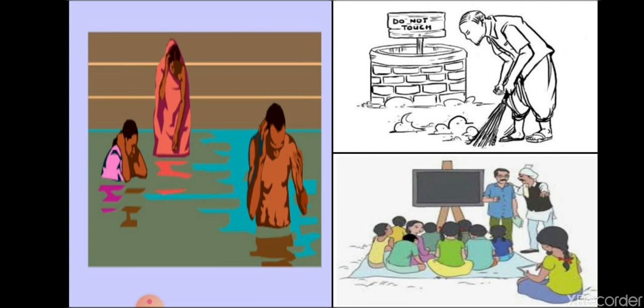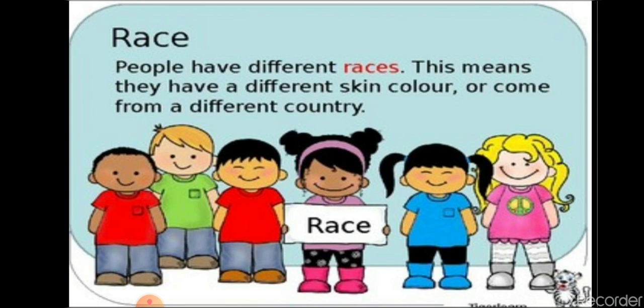Many social reformers worked to abolish the caste system and untouchability from society. Among those reformers were Ishwar Chandra Vidya Sagar, Sri Narayan Guru, Mahatma Gandhi, and Dr. Bheem Rao Ambedkar — all of them worked to abolish the caste system as well as the practice of untouchability.